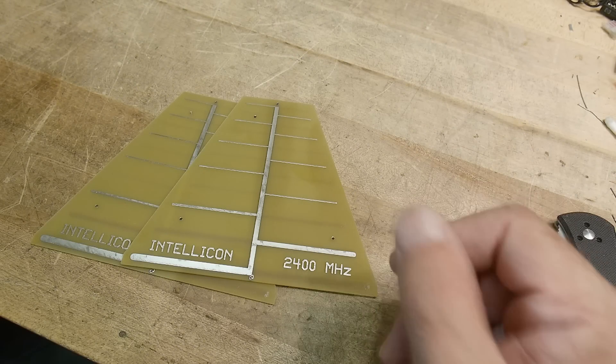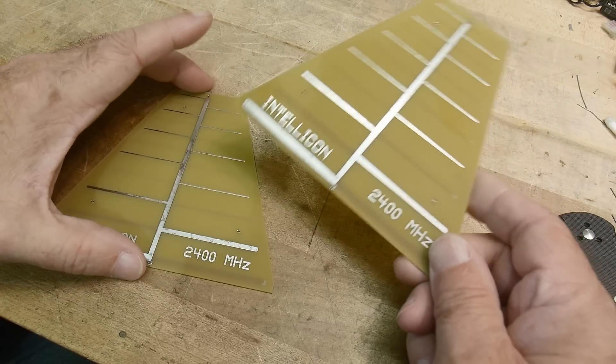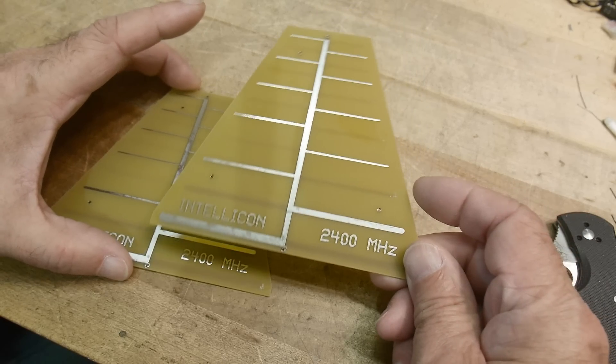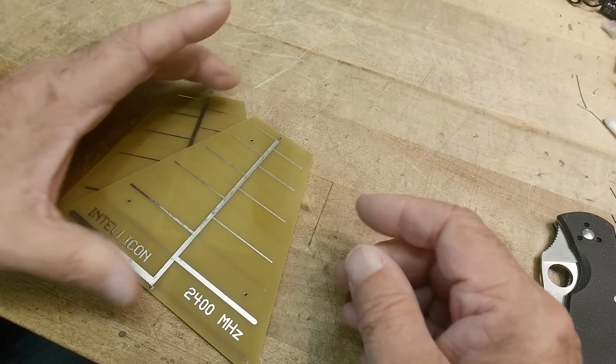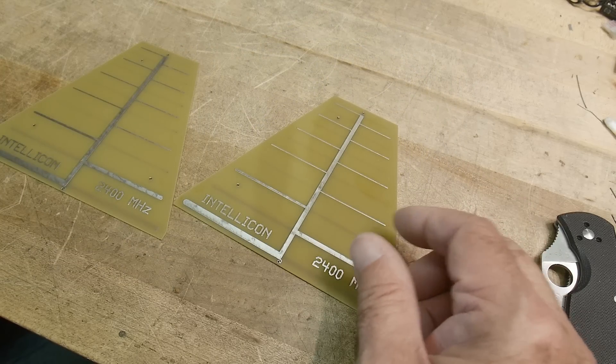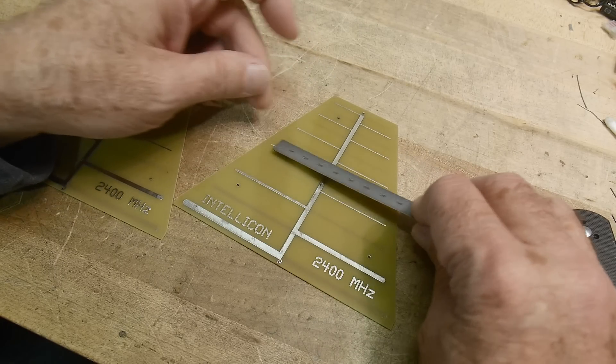So I wanted some antennas to do an experiment with, and I found something on eBay that has some bare PC boards, which will be great for my application. These are marked 2400 megahertz, but they're actually a log periodic design. I looked it up, and that calculates to about 62 millimeters.